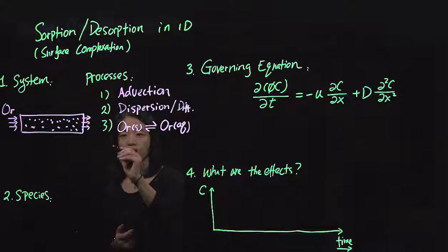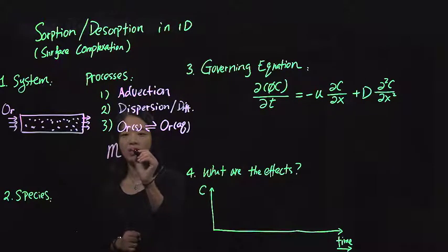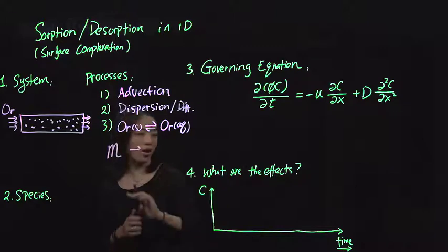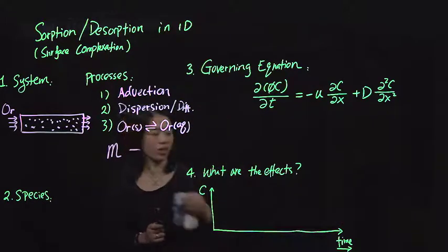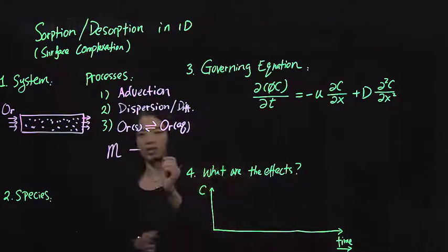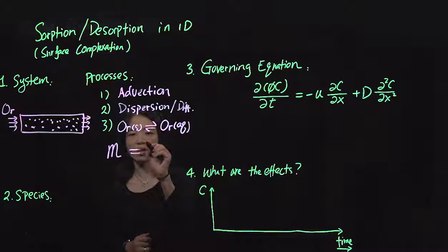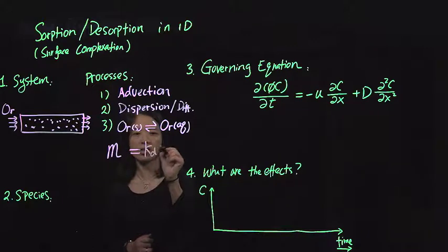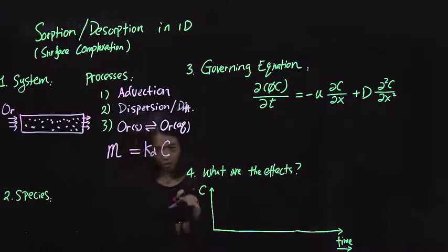So the expression between how it governs, how it's different from the previous one, is here you have essentially an algebraic relationship. Instead of rate law, m equals kd times concentration.